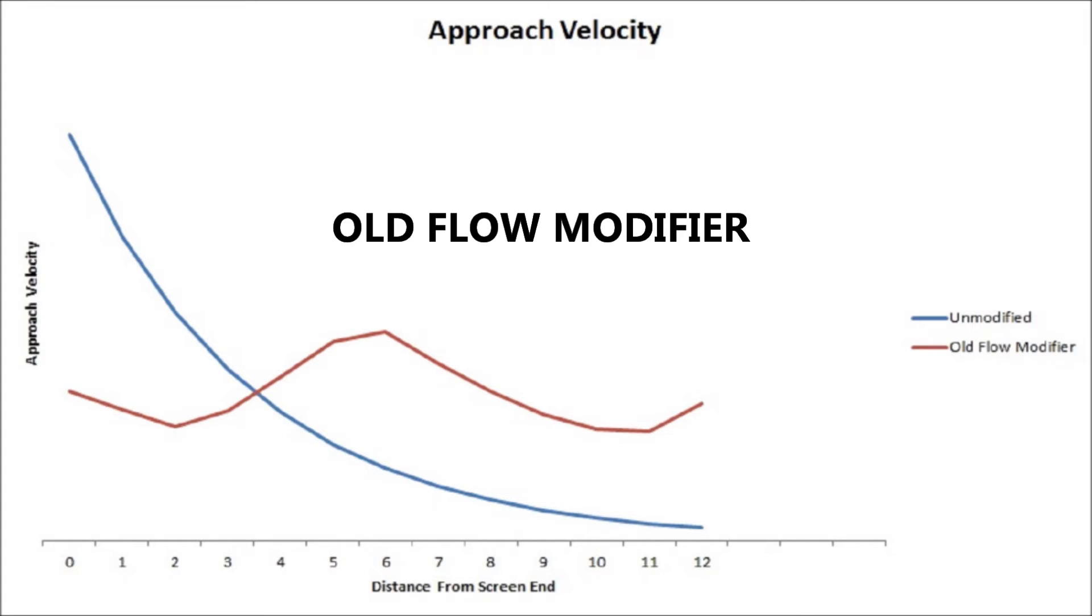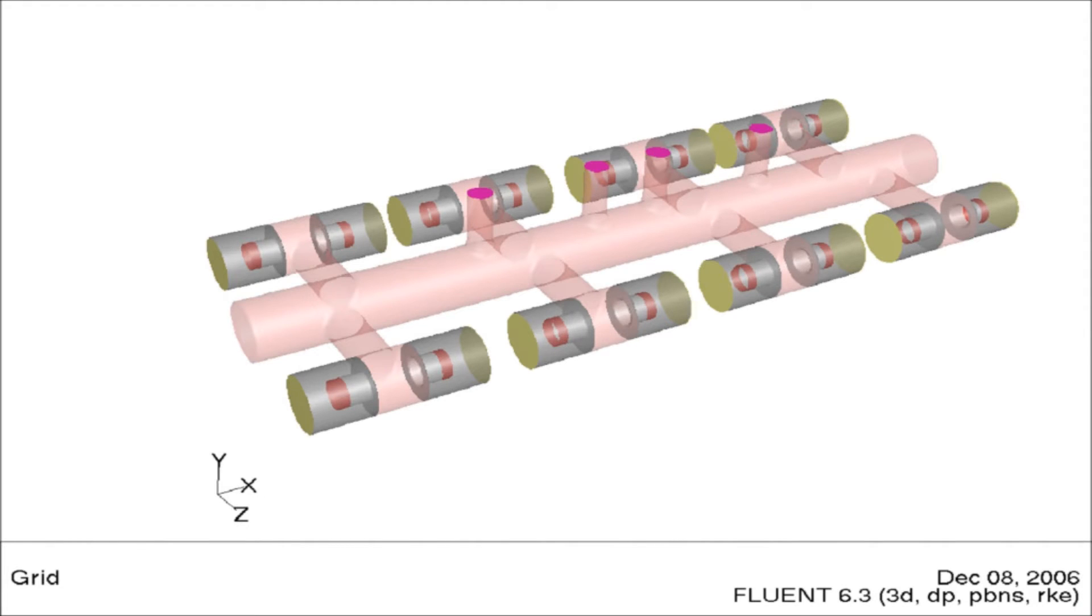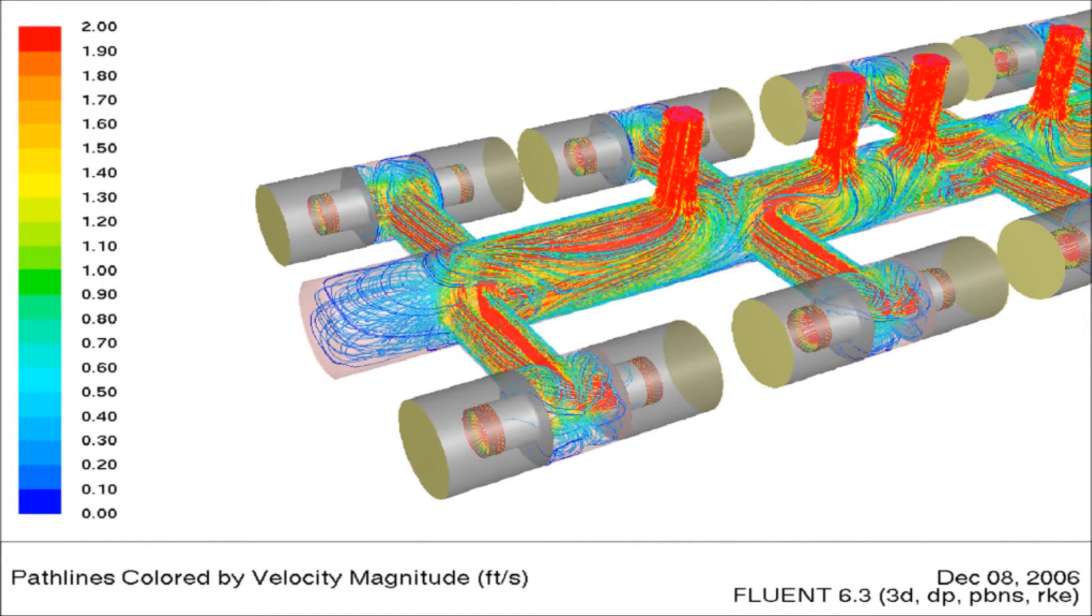Our old flow modifier provides a significant improvement over the unmodified screen. This provides a lower variability between average peak flow.